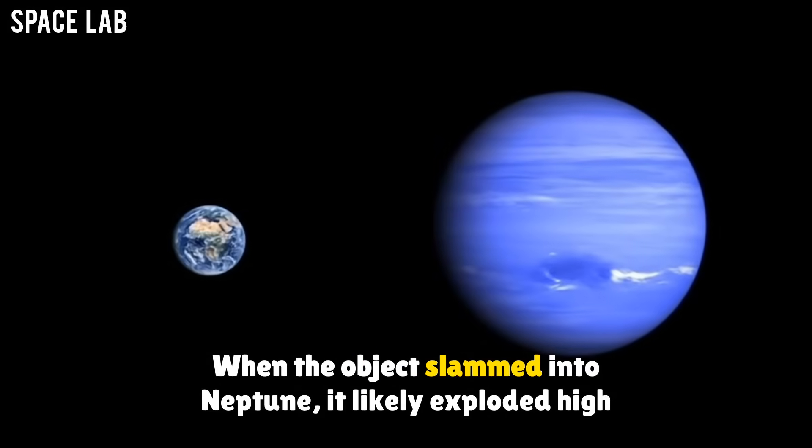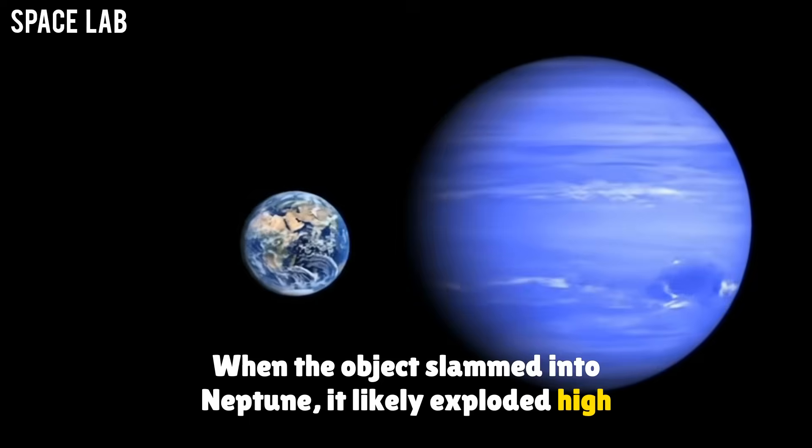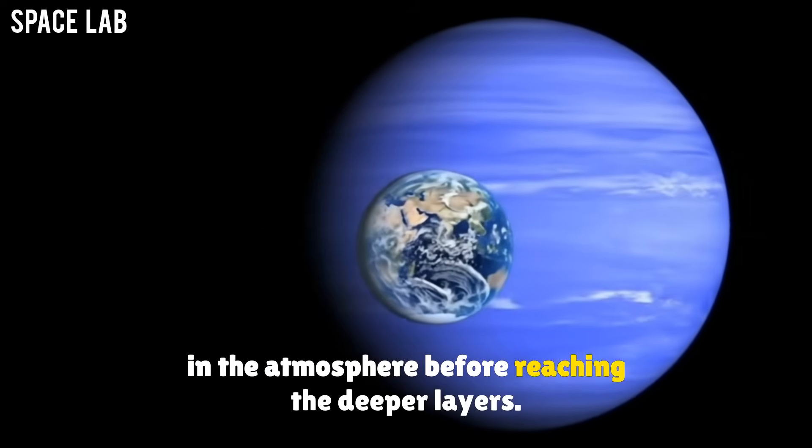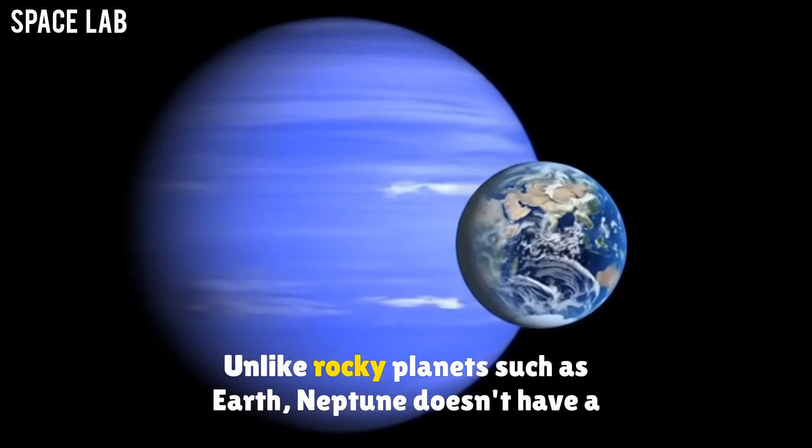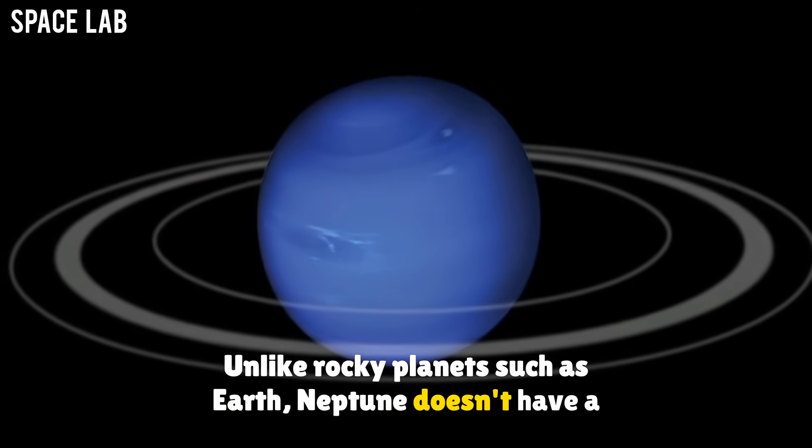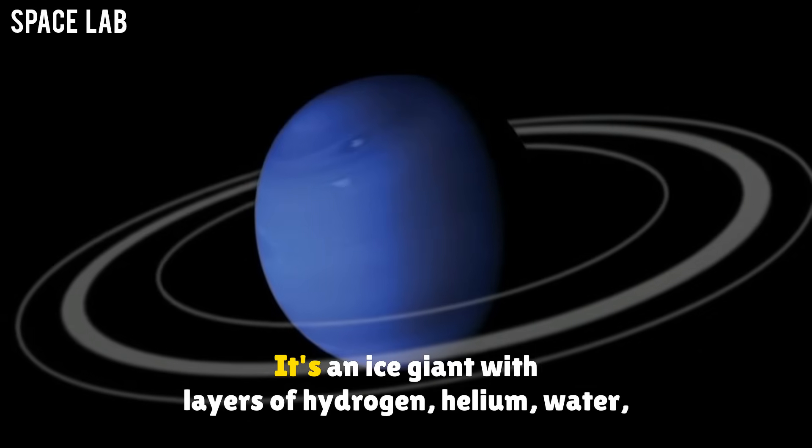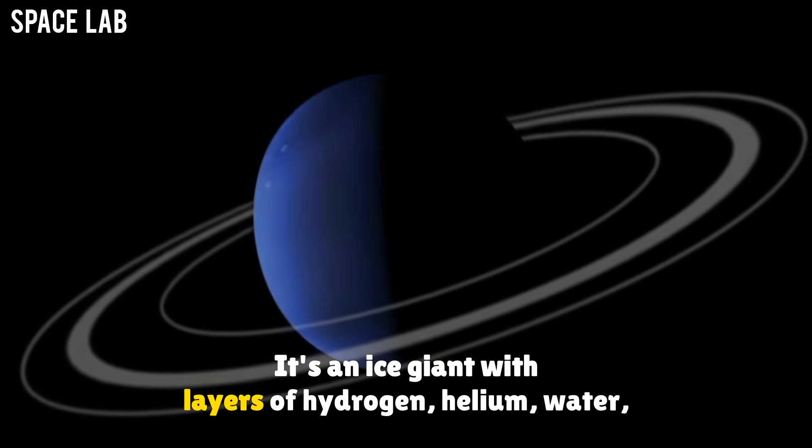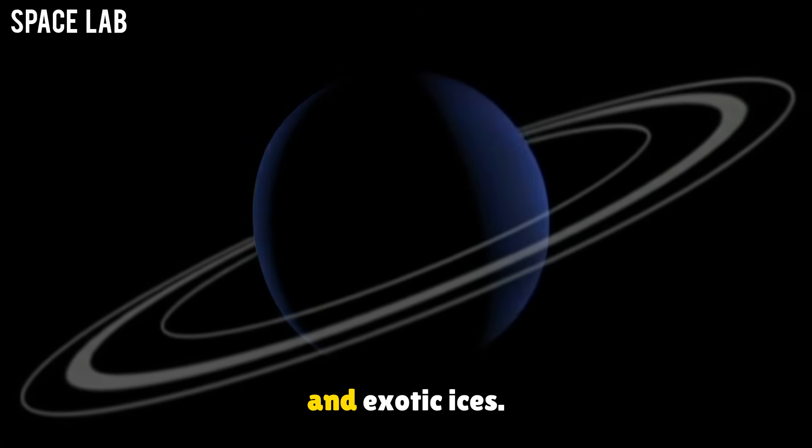When the object slammed into Neptune, it likely exploded high in the atmosphere before reaching the deeper layers. Unlike rocky planets such as Earth, Neptune doesn't have a solid surface. It's an ice giant with layers of hydrogen, helium, water, and exotic ices.